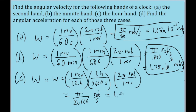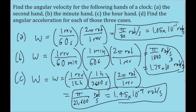...then that is pi over 21,000 radians per second. Or alternatively, 1.45 times 10 to the power of negative 4 radians per second. That's two different ways of writing the angular velocity for all three hands of the clock.